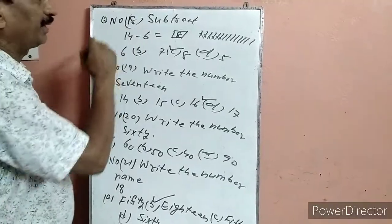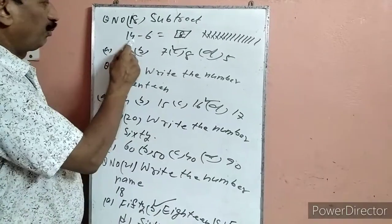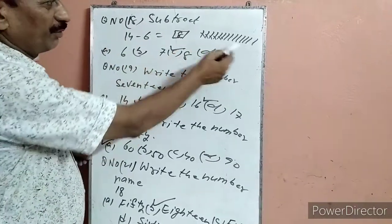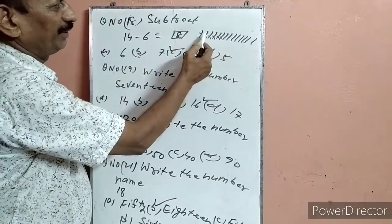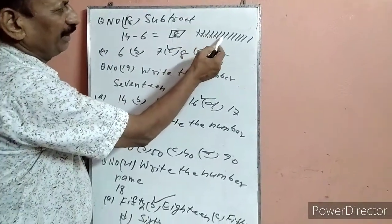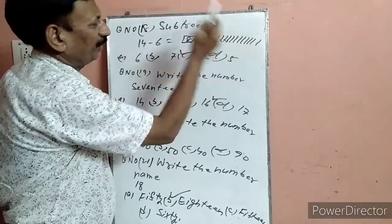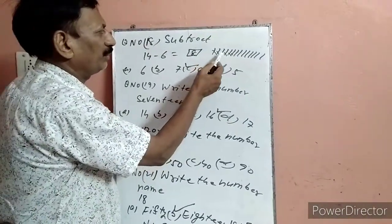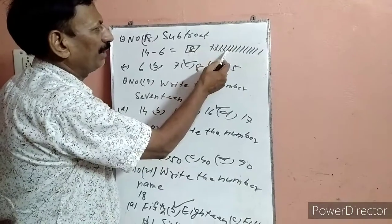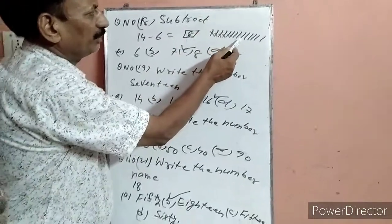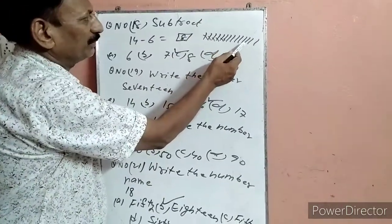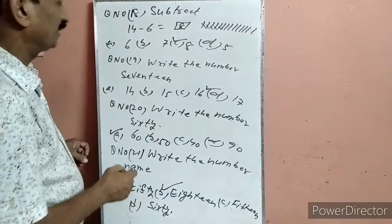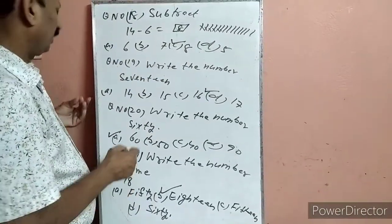Question 18: Subtract — 14 minus 6. 14 line drop करेंगे: 1 से 14 तक. 6 line को cross करेंगे: 1, 2, 3, 4, 5, 6. बच गया: 1, 2, 3, 4, 5, 6, 7, 8. Answer 8. 8 कहां पर है — C पर. C पर टिक लगा दिया.